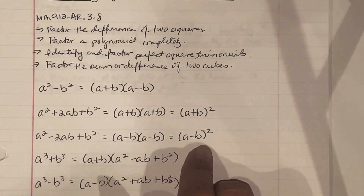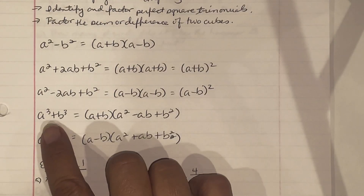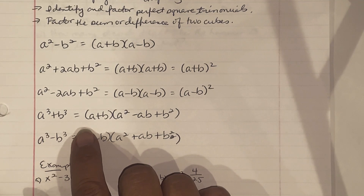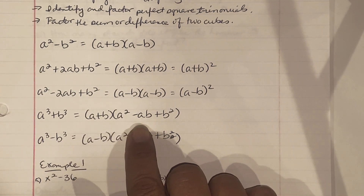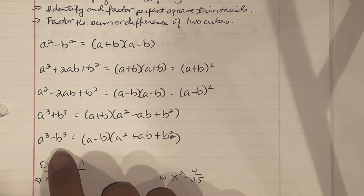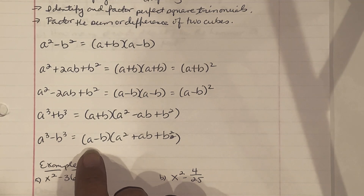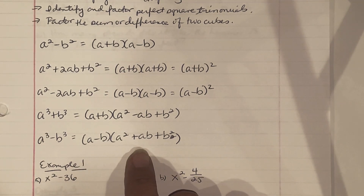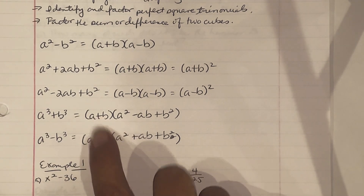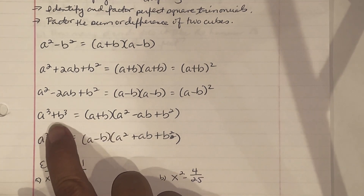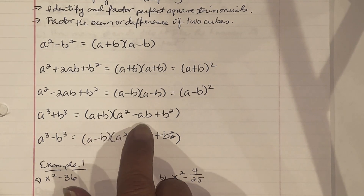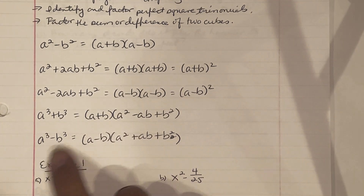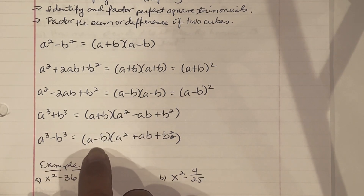If we see a cubed plus b cubed, which is our sum of cubes, this equals a plus b times a squared minus ab plus b squared. And then a cubed minus b cubed, which is our difference of cubes, equals a minus b times a squared plus ab plus b squared. Notice the difference: when it's the sum, the first parentheses is positive and the middle term is negative; when it's the difference, the first term has a minus sign and the middle piece is positive.